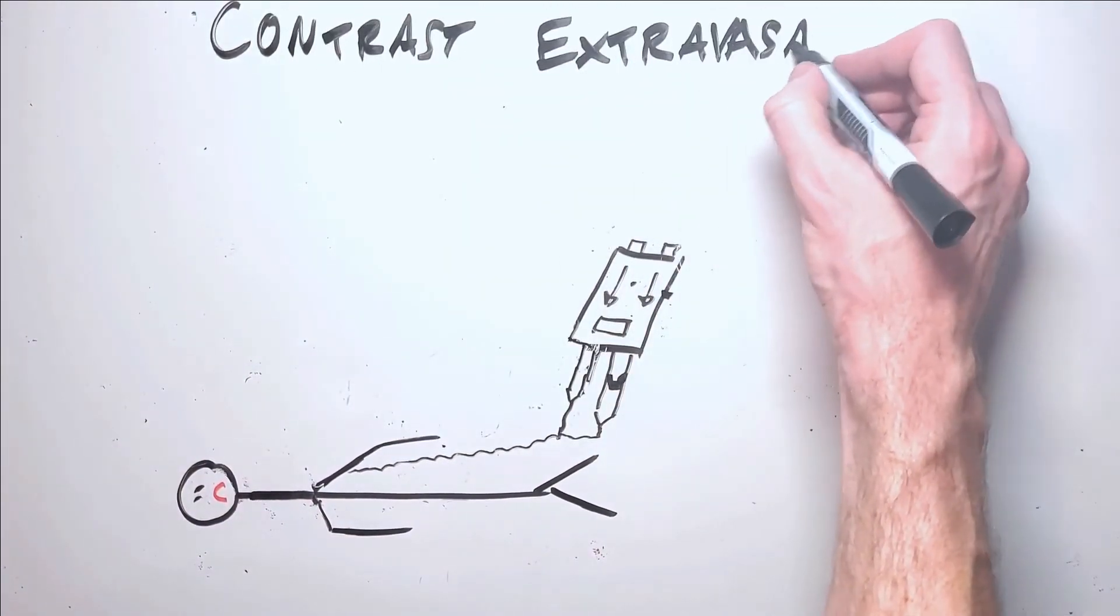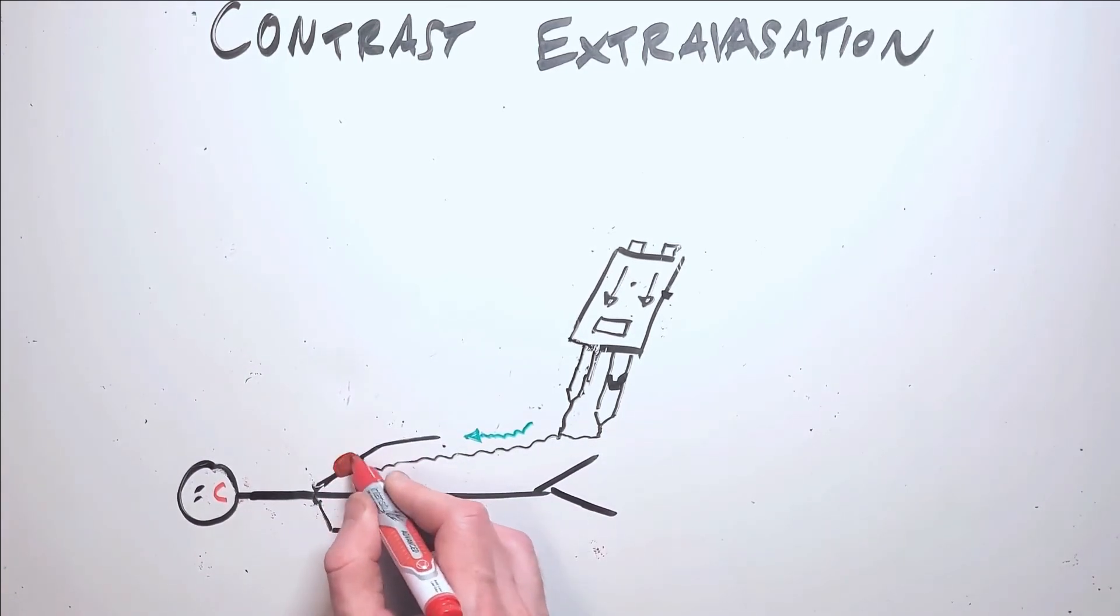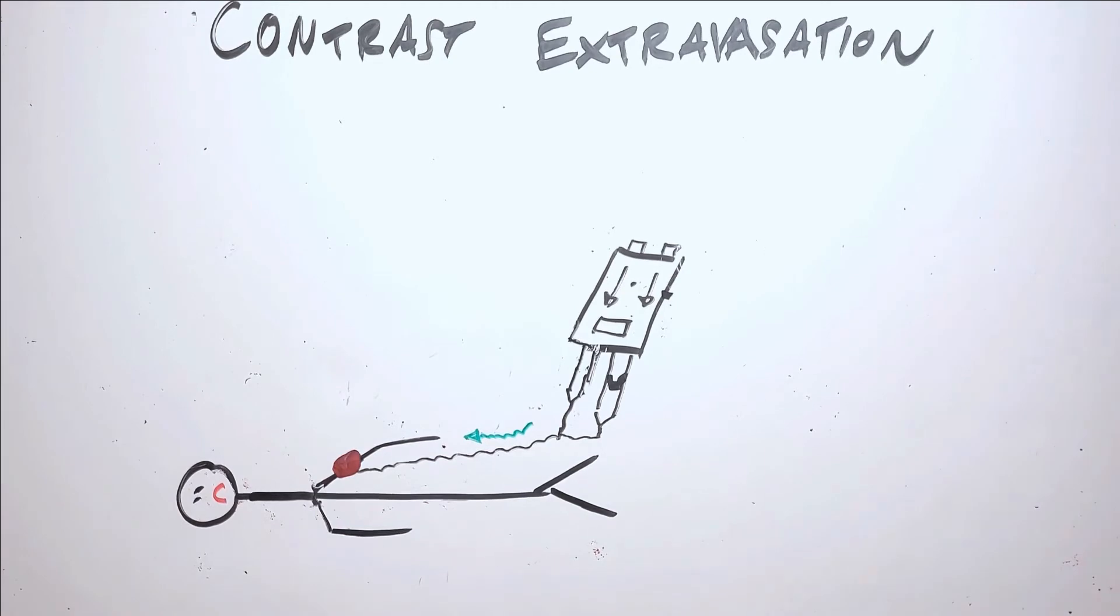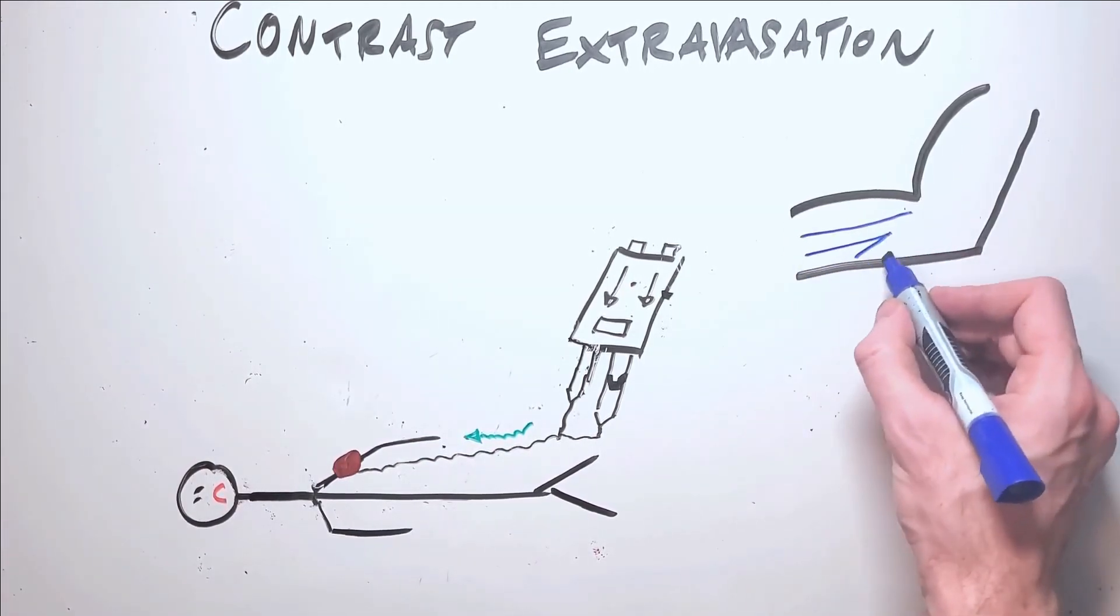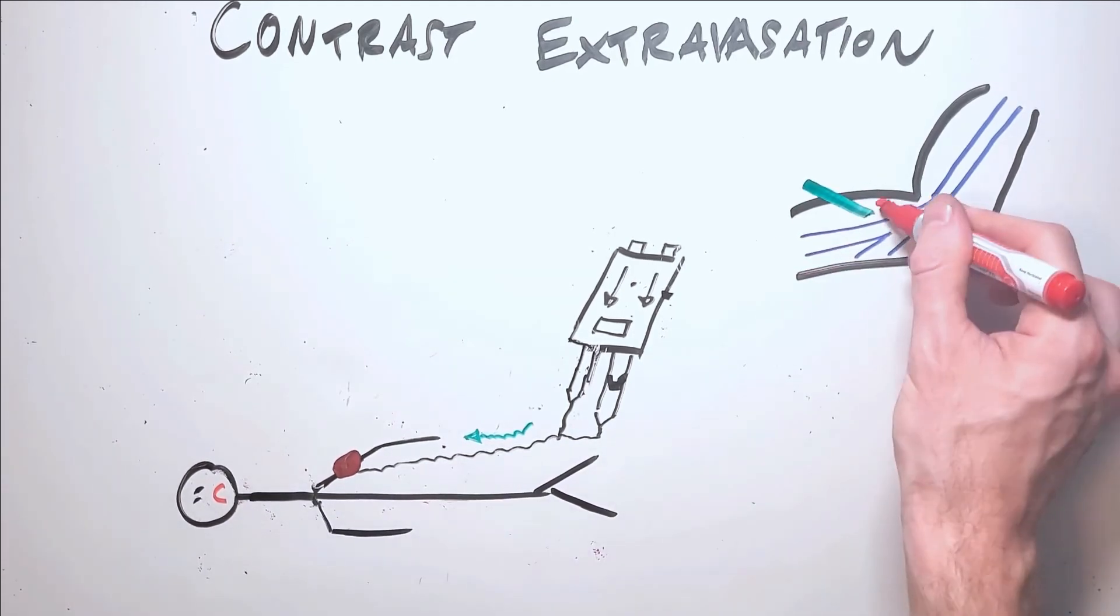One final complication which can arise from the contrast administration is the extravasation of contrast. In this scenario, the contrast agent is delivered by the power injector, but it doesn't go into the venous system. Instead, it goes into the surrounding space around the injection site.